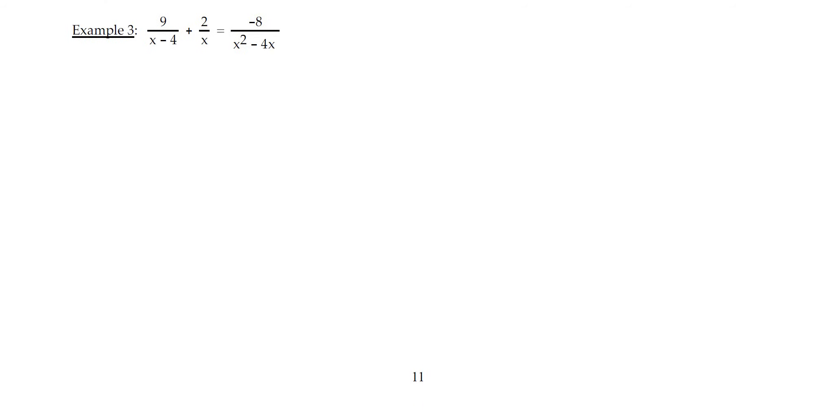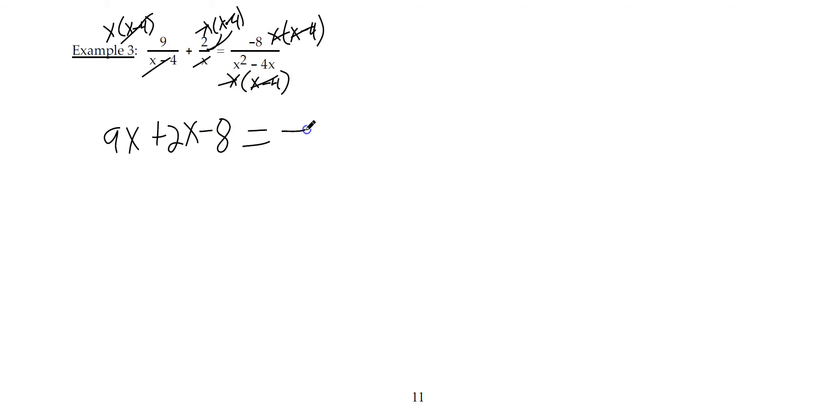Example 3, clearing fractions. Factoring the denominator, greatest common factor, can help us see that the common denominator needs an x minus 4 and it needs an x. So we need to multiply by x and x minus 4 on each term. And this reduces, giving us 9x. This reduces, and we can distribute the 2, so that's plus 2x minus 8. And the right side, that all reduces and just leaves negative 8.